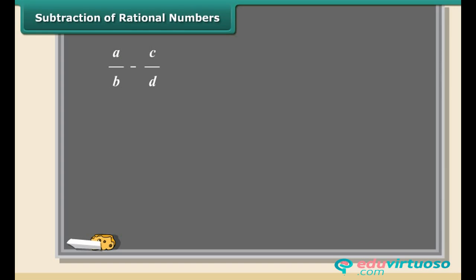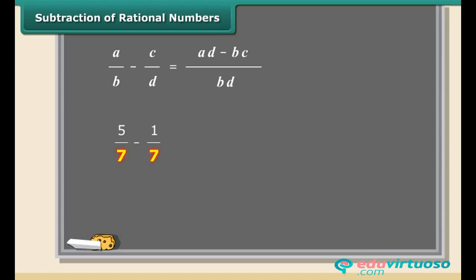Subtraction of rational numbers is the same as addition. Before subtracting, always look for the common denominator. If it's not common, multiply both parts of each number by the bottom part of the other. Here is an example: we will subtract one by seven from five by seven. The denominators are already the same, so subtract the numerators and put the answer over the same denominator.